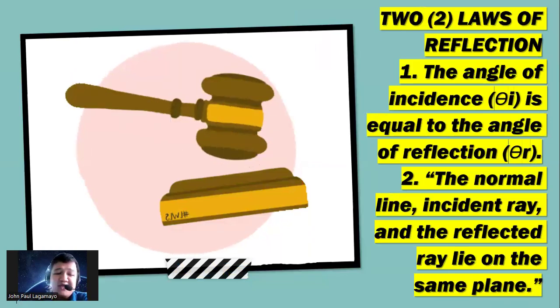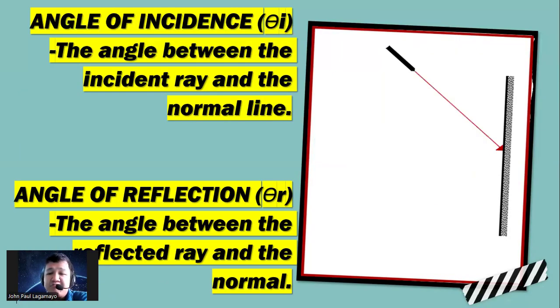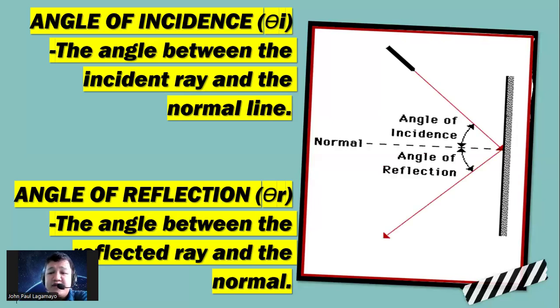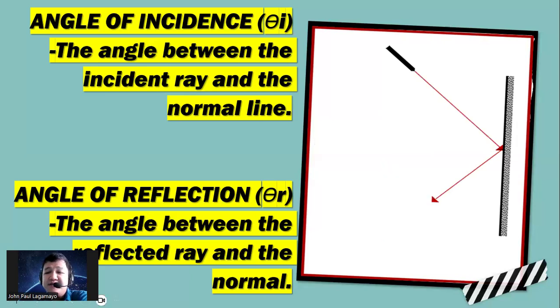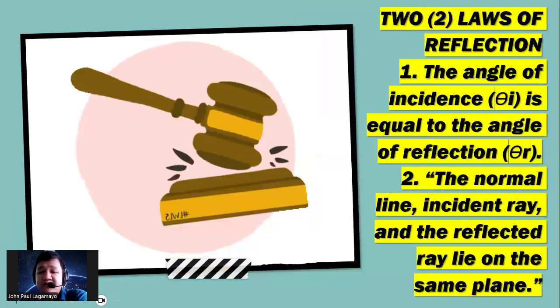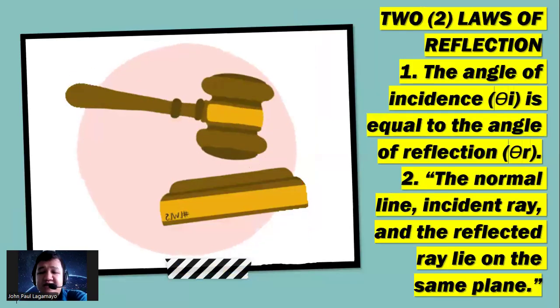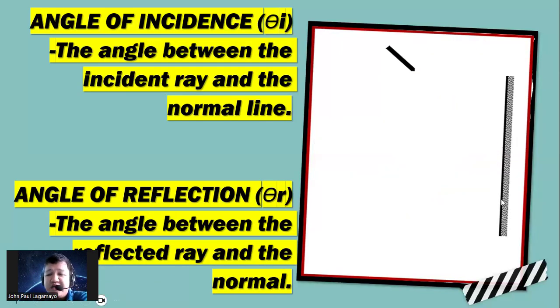We have two laws of reflection here. The angle of incidence is equal to the angle of reflection. Let's have this for example: if I say that the angle of incidence would equal to 30 degrees, therefore the angle of reflection formed would also be 30 degrees. Number two here: the normal line, incident ray, and the reflected ray lie on the same plane. These three rays are actually lying on the same plane or mirror.